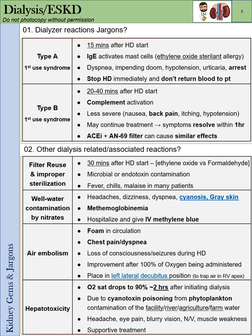To summarize: Type A and Type B are the first two dialyzer reaction syndromes — Type A is severe, Type B is less severe. Then there are four others: filter reuse and improper sterilization, well water contamination by nitrates — key keyword is methemoglobinemia, treated with IV methylene blue — air embolism, and hepatotoxicity.